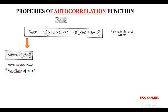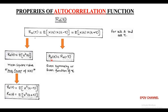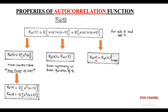The average power of random process X(t) is obtained as expectation of X²(t minus tau) or expectation of X²(t plus tau). The second property is that the autocorrelation function is an even function of tau, i.e., it has even symmetry, with the condition R_X(tau) equals R_X(minus tau). The third property is that the maximum value of R_X(tau) equals the mean square value R_X(0), meaning R_X(0) must be greater than or equal to the magnitude of R_X(tau).